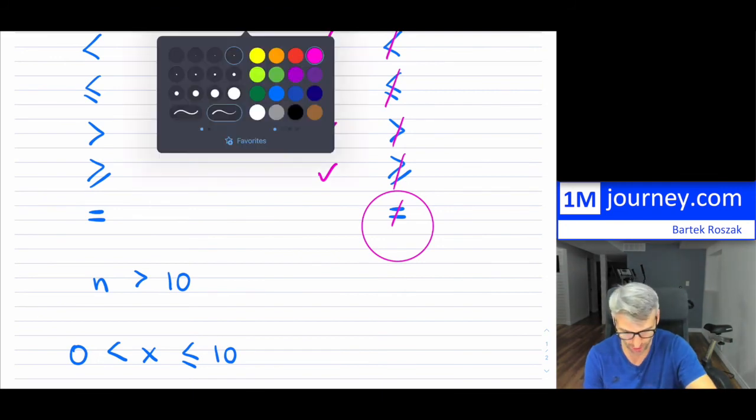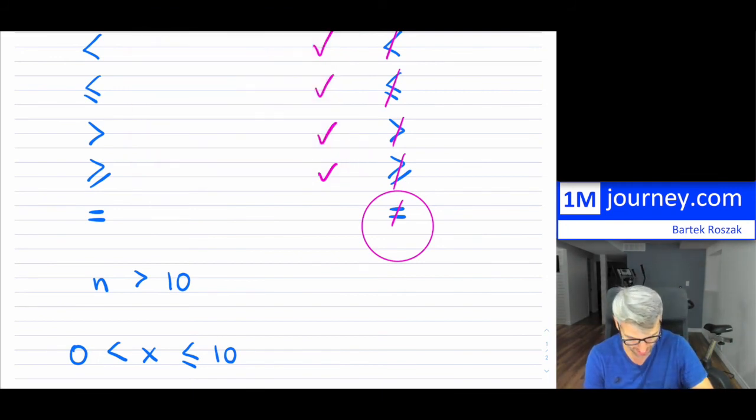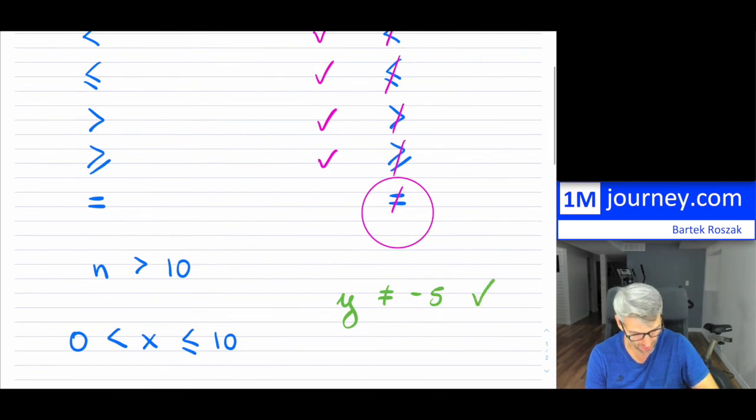For instance, what if I had, let's say maybe some y, and I didn't want y to be equal to minus 5. That is a very nice way of using a comparison symbol, and it's a negated one. So that means y can be anything except negative 5.